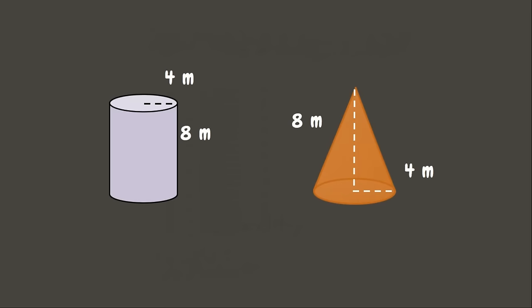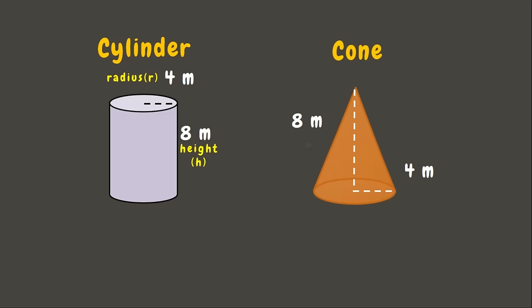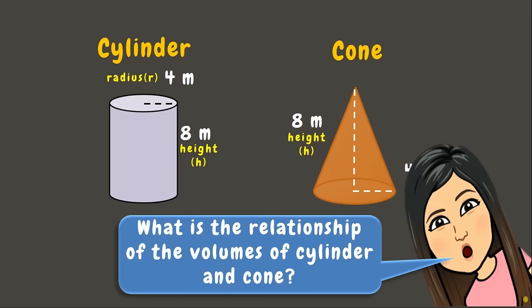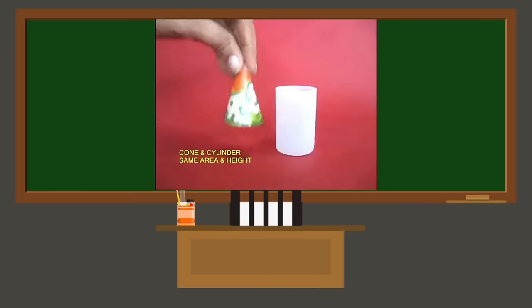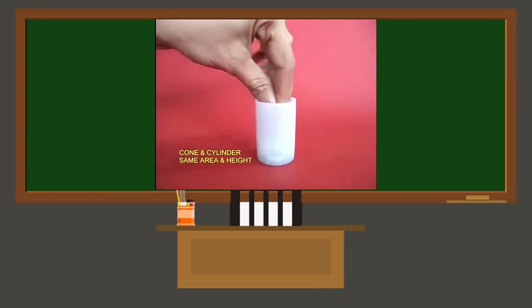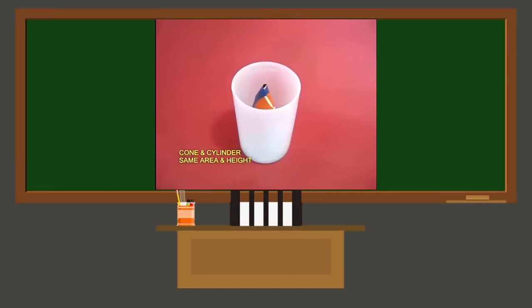Now let's take a look at these two figures. We have a cylinder and a cone with the same height, base, and radius. Let's determine the relationship of the volumes of the cylinder and cone using an experiment. Here we can see that the cylinder and cone have the same height and base.